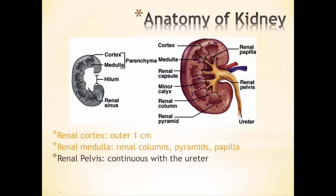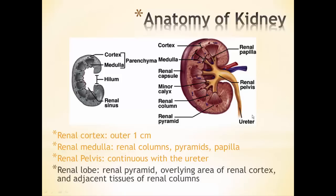The renal pelvis is the area that collects the urine from the papilla as it moves down. The collecting tubules down through the papilla enter the minor calyxes, and that brings us to the renal pelvis. The renal pelvis then continues, is continuous with the ureter, and therefore the urine will leave through the ureter. A renal lobe is a pie section of the kidney, having overlying areas of the renal cortex, the renal pyramid, and the adjacent tissues of the renal columns.